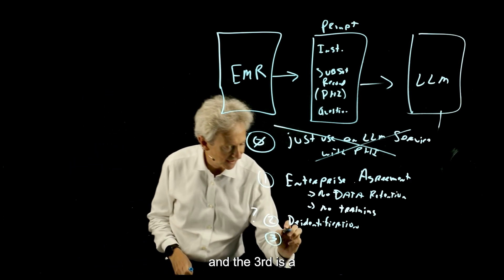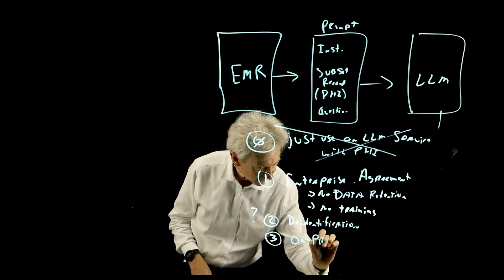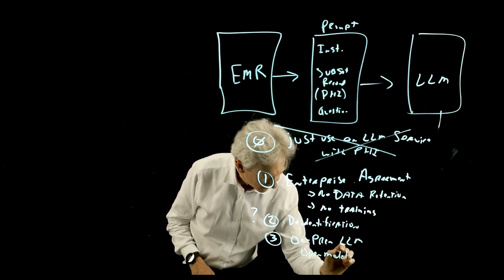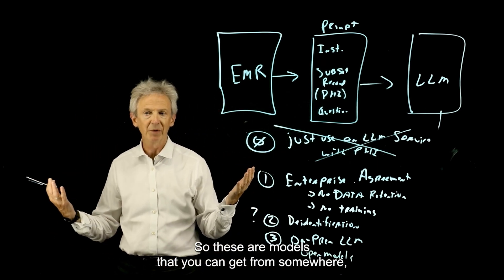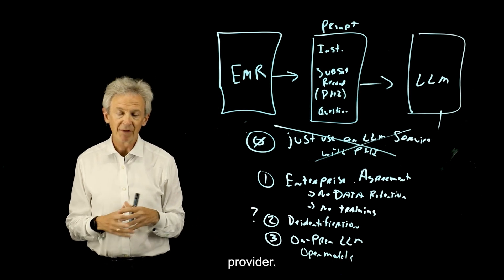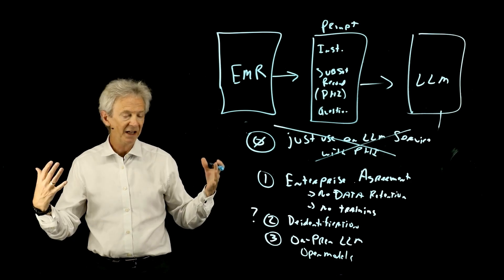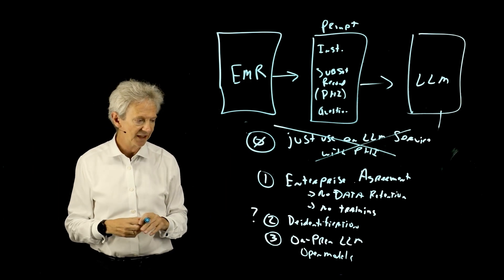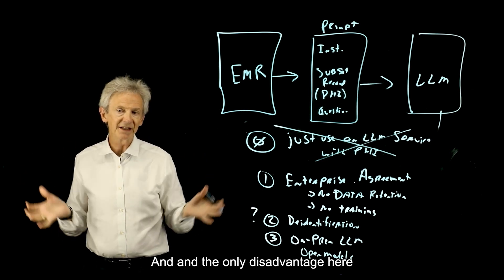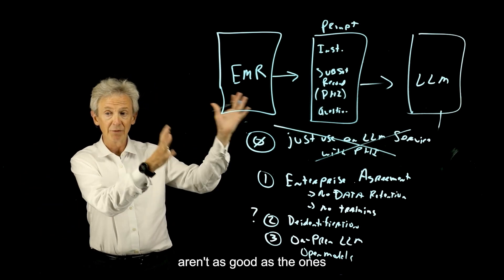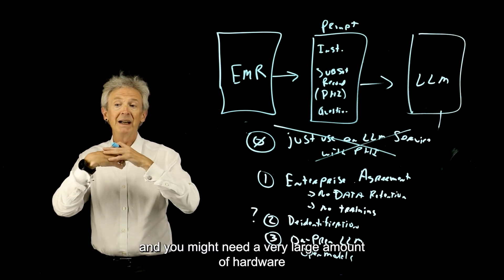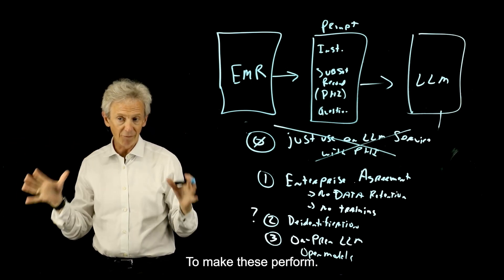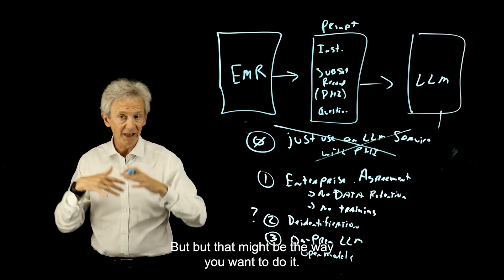And the third is an on-prem LLM. They're also sometimes called open models. So these are models that you can get from somewhere, Hugging Face or some other model provider. You can actually install these on-prem, and no information goes anywhere. Basically, the system stays on-prem or in your tenant, in your cloud tenant. And the only disadvantage here is some of these models aren't as good as the ones provided by model service providers. And you might need a very large amount of hardware or a very big system to make these perform.